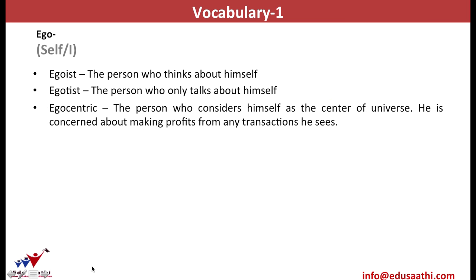The next word we may discuss here is egocentric. Egocentric is the person who thinks himself to be at the center of the universe. The word is made of two roots: ego, which means self, and centric, which means center. Thus, egocentric is any person who would come and meet you only if he seeks some profit from you.